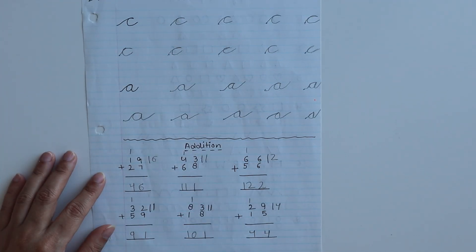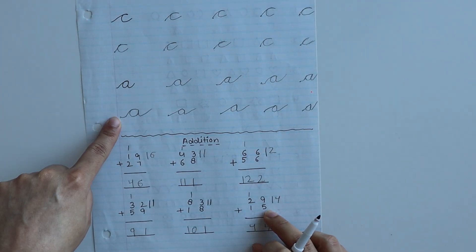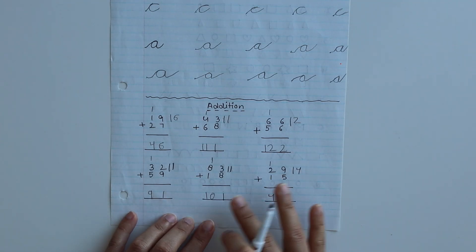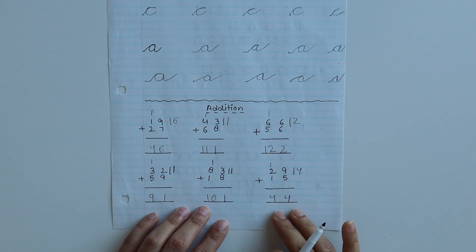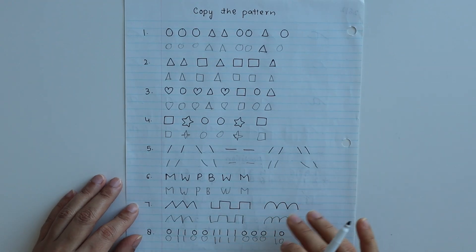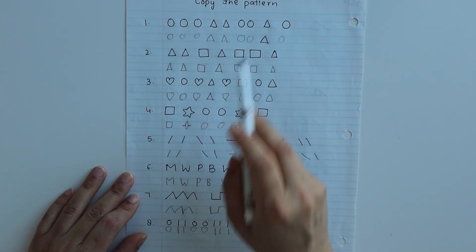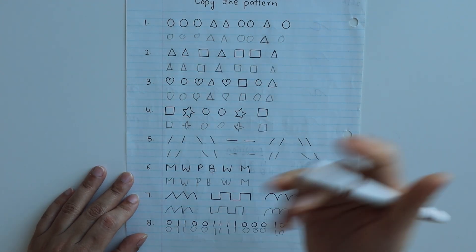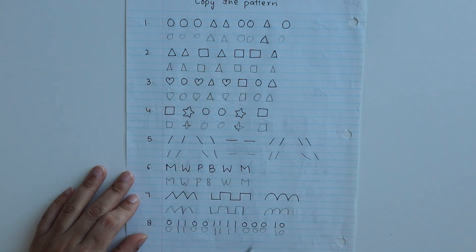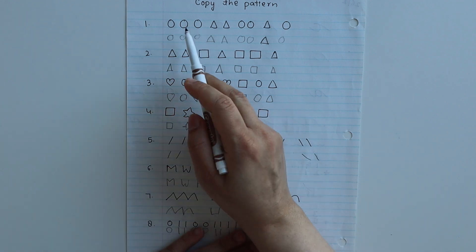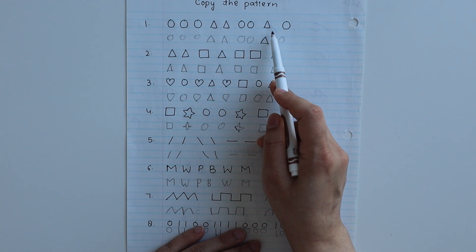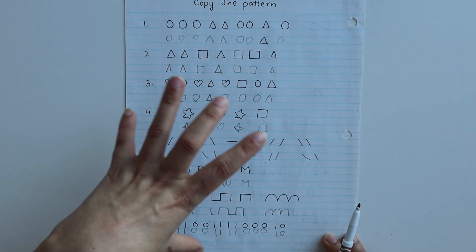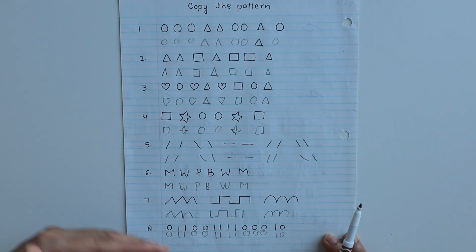The next worksheet is for cursive writing practice. I've given C and A letter cursive writing practice. Below I've given some simple sums. Next worksheet is copy the pattern. I've made some patterns using shapes and kept spaces blank. The child follows the same pattern, like three circles, then two triangles, then two circles, one triangle, one circle. On the whole page I've drawn different patterns using shapes or letters, and the child has to copy those patterns.